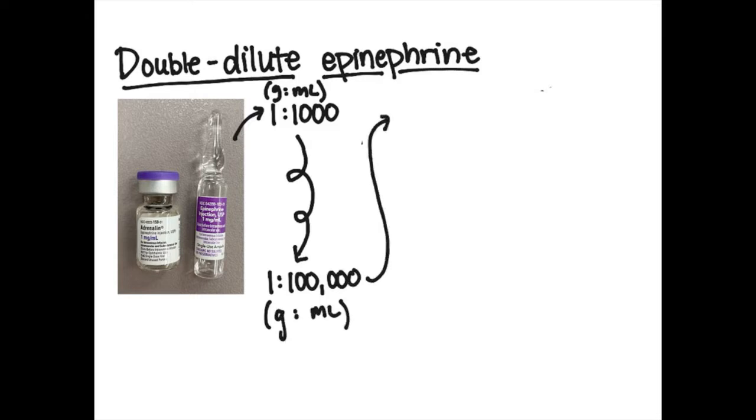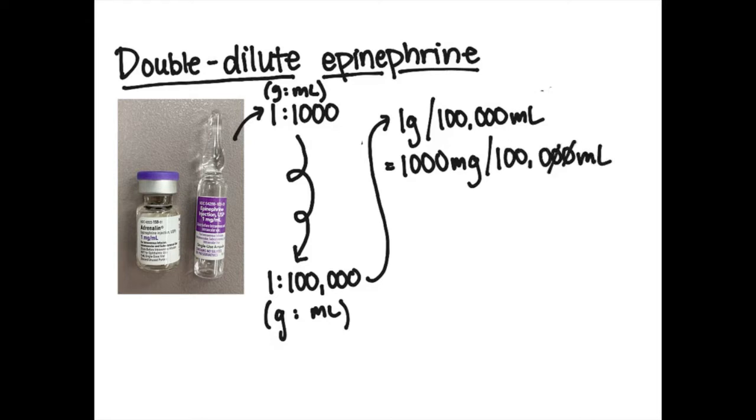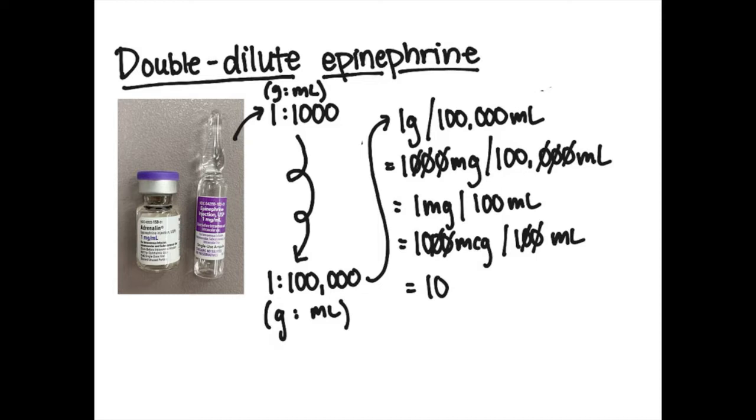So this is the same thing as one gram per one hundred thousand milliliters. This is super awkward to look at. When we dose things in the OR we do it in like milliliters at a time. So let's make this look better. So one gram is the same as a thousand milligrams. We'll cross out some zeros. You get one milligram per a hundred milliliters. That's the same thing as a thousand micrograms per one hundred milliliters. Cross out some zeros and you get ten micrograms per milliliter. So when you make a syringe of double dilute epi, you end up with a concentration of ten micrograms of epinephrine per milliliter.